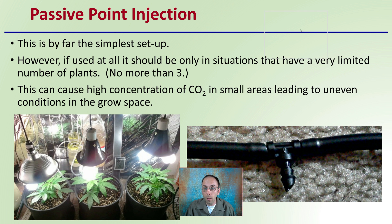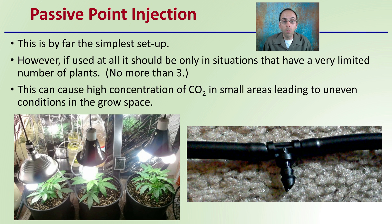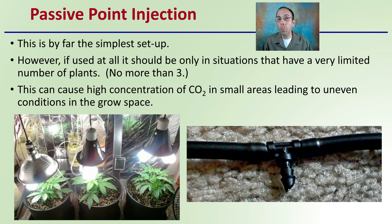Passive point injection is by far the simplest setup compared to all the other options that exist. However, if used at all, it should only be in situations that have a very limited number of plants — basically no more than three. Spaces should be kept relatively small.